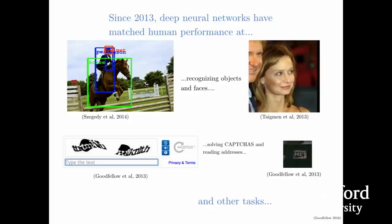That same year we also saw that object recognition applied to human faces caught up to about human level—suddenly we had computers that could recognize faces about as well as you or I could recognize faces of strangers. You can recognize the faces of your friends and family better than a computer, but when you're dealing with people you haven't had a lot of experience with, the computer caught up to us in about 2013.